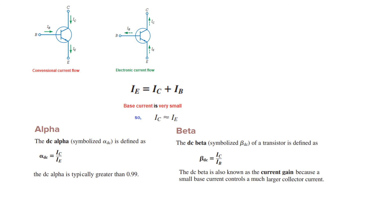So let's say one atom or one positive charge of base is attracting or sending 10, then the gain will be 10. If it is one of this is attracting 200, then the gain will be 200. So the beta is also known as the current gain because a small base current controls a much larger collector current.